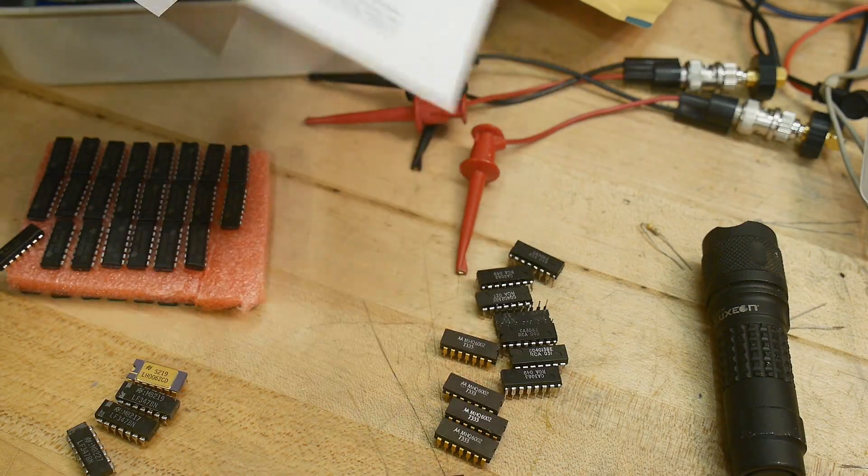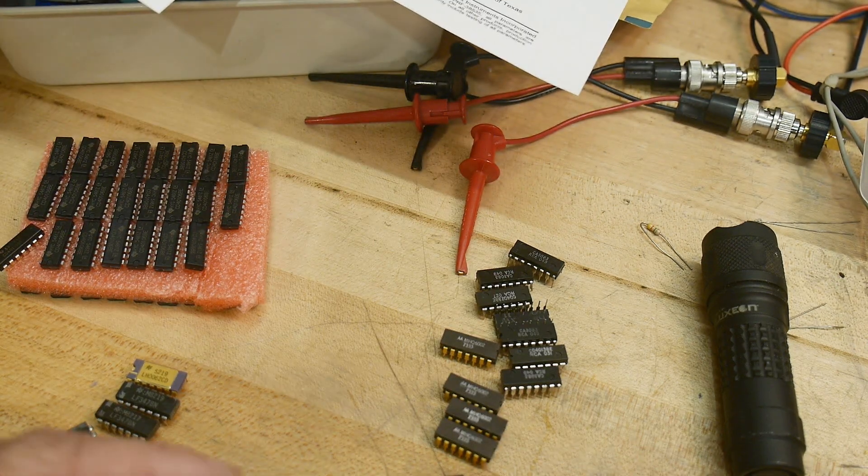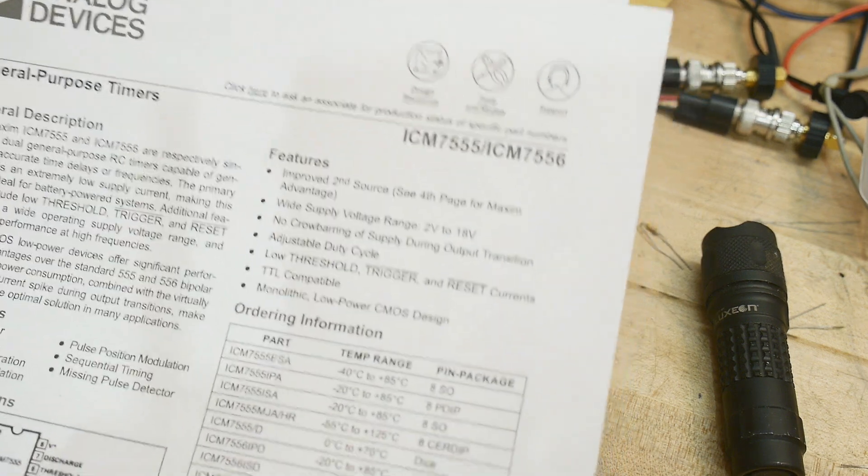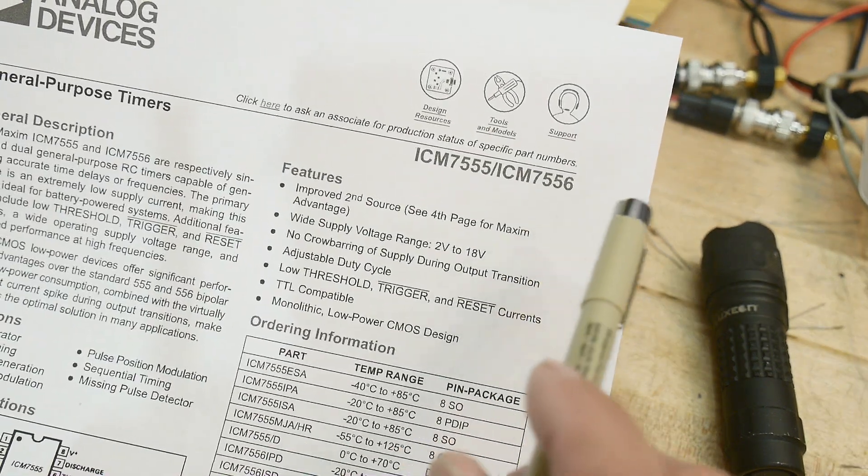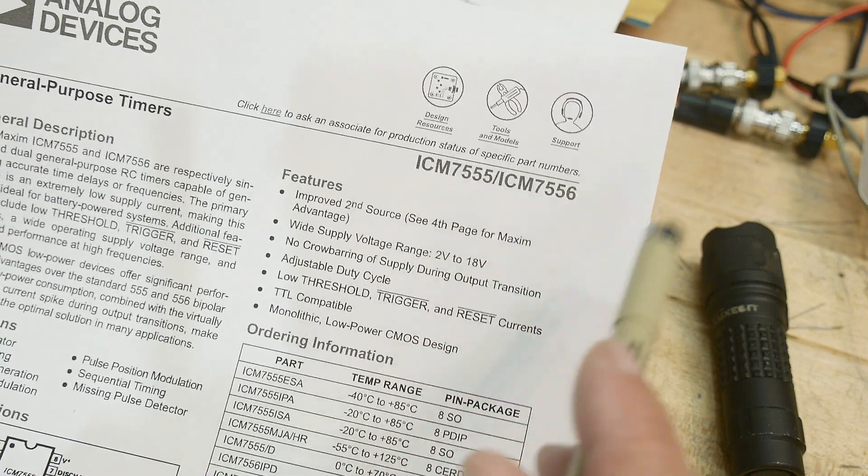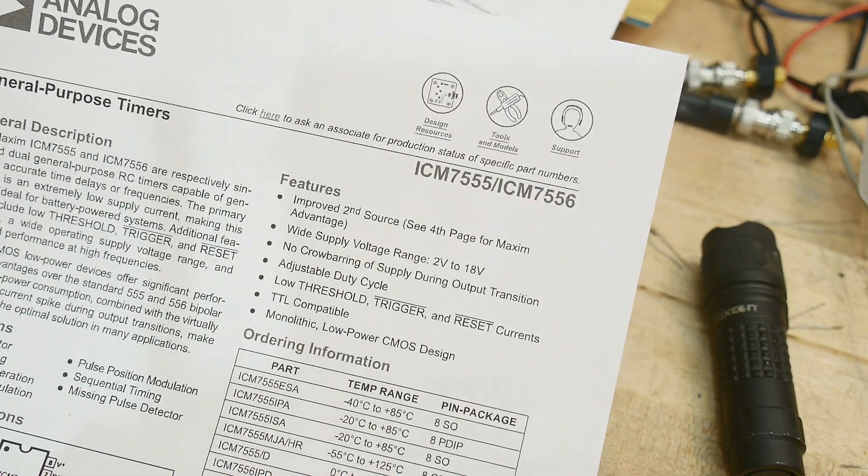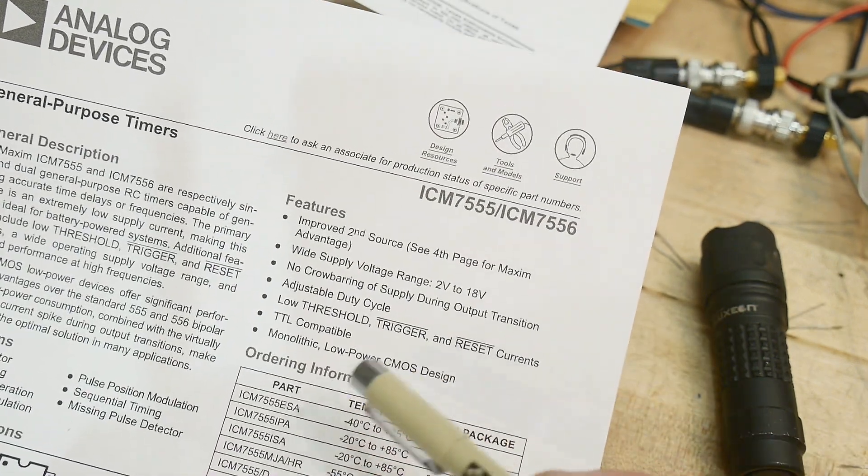All right, so 556, but that's not the chip we're going to be using today. We're going to be using one that's even better. We're going to be using a 755 or a 7556. So when you have a 7 in front, that says it's a CMOS part. So those were all old NMOS parts. These are CMOS parts.